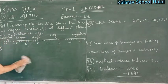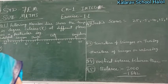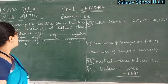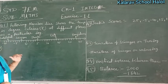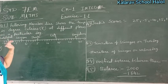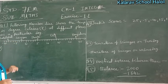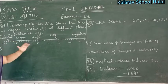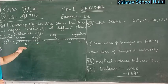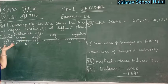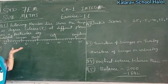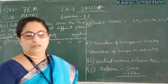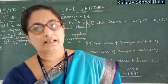Now we start exercise 1.1. Question number 1: the following number line shows the temperature in degree Celsius at different places on a particular day. This number line is here with integers — 0, minus integers and plus integers.